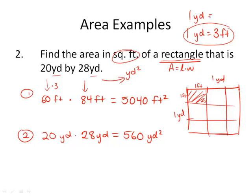So there are actually 9 square feet in one square yard. So every one of these square yards has 9 square feet. Multiply 560 by 9 and you get 5040 square feet. However, if you used 3, it would be incorrect. So please be careful about your units.